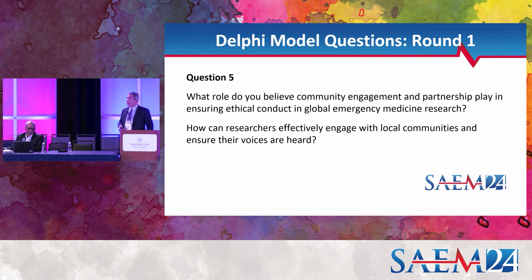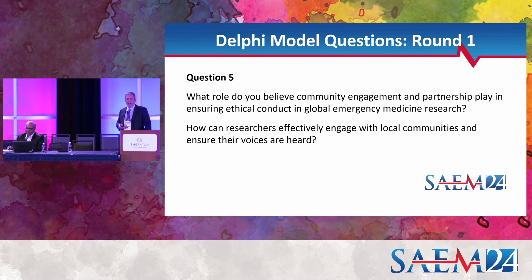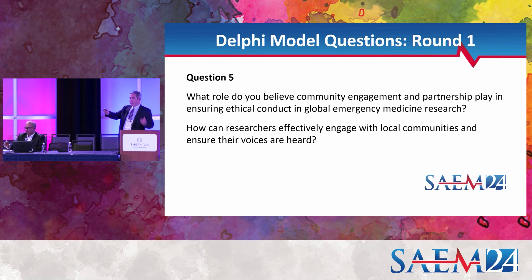James: I think we have time for a few more of these questions — I really appreciate the feedback, this is exactly what we wanted. Question five: what role do you believe that community engagement and partnership play in ensuring ethical conduct in global EM research? You've all been talking about that already. And how can researchers effectively engage with local communities and ensure that their voices are heard? We've heard about having an advocate, a local research assistant, or someone who knows the culture — mitigating biases we bring to the situation.